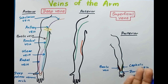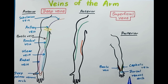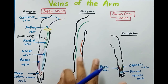Now let's talk about the superficial veins of the arm. Superficial means they are closer to the skin. Here you can see the dorsal venous arch. From the medial end of the dorsal venous arch the basilic vein arises, and from the lateral end the cephalic vein arises. These two veins arise from the back side of the arm and then move to the anterior side.